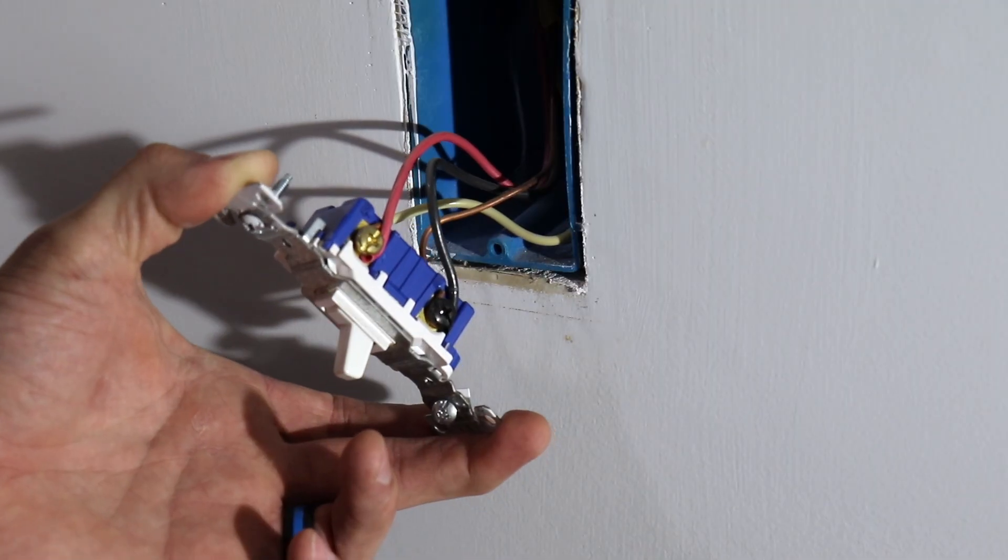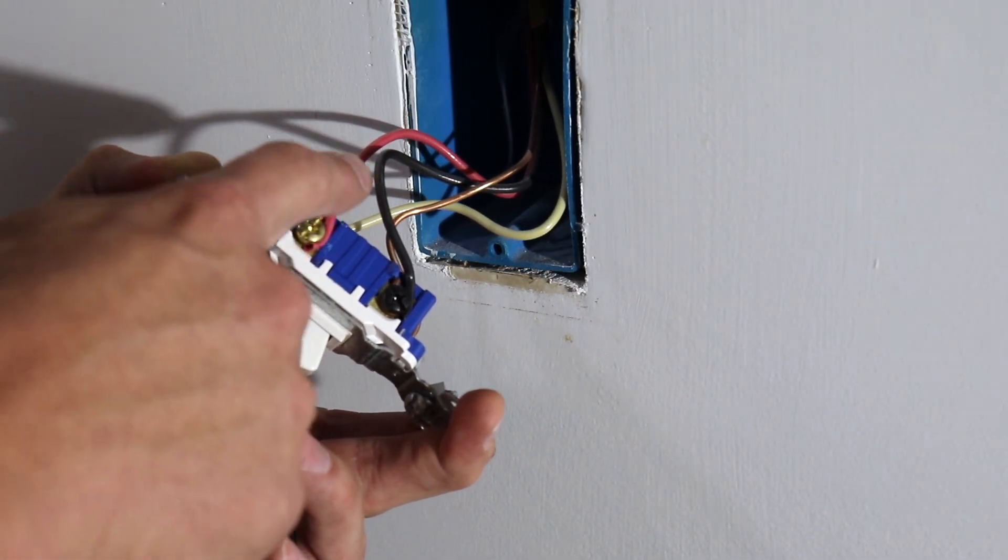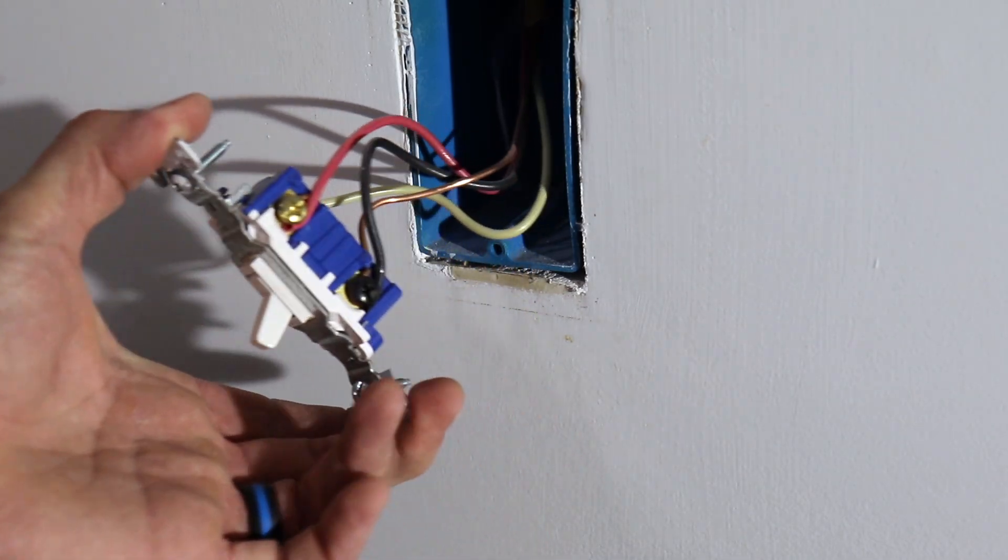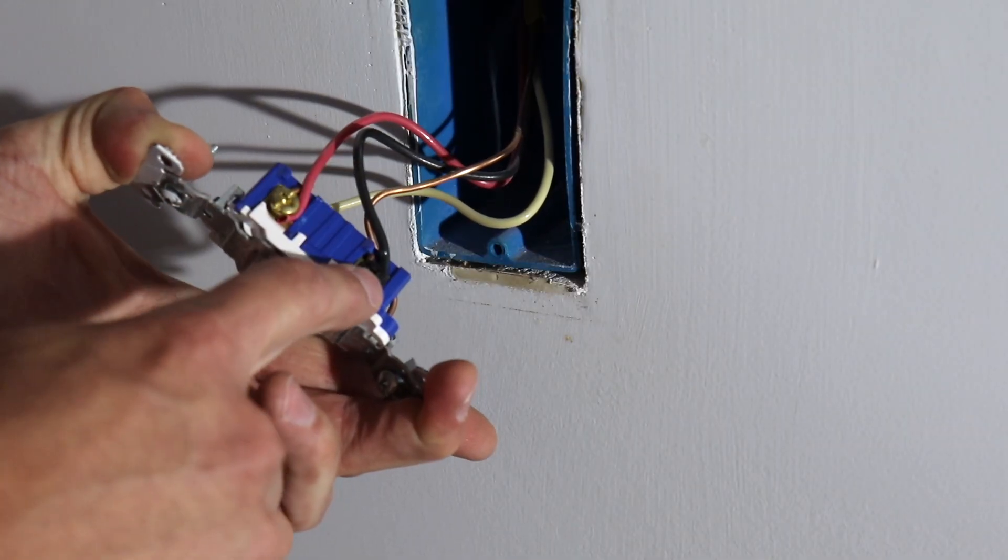Now, depending on how your house was wired, it could be a red wire, it could be a white. We just don't know because different electricians are going to wire things differently. So in this case, we have a black wire going to the common.